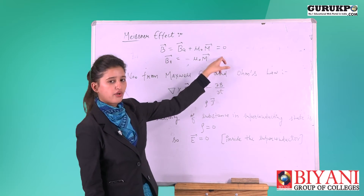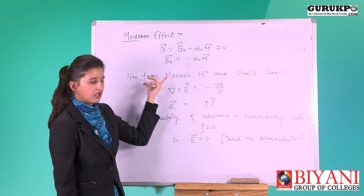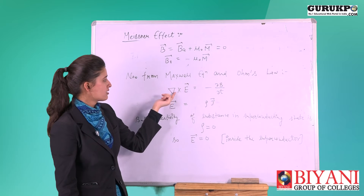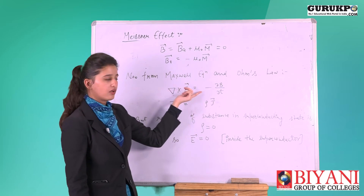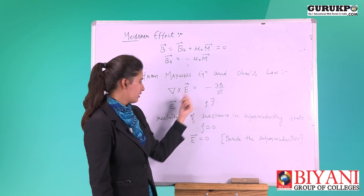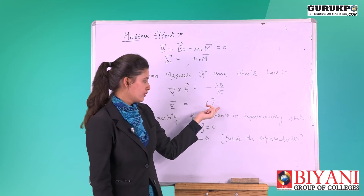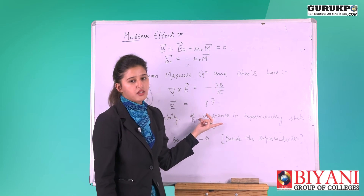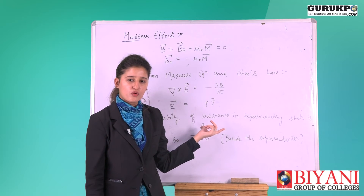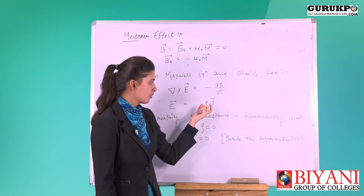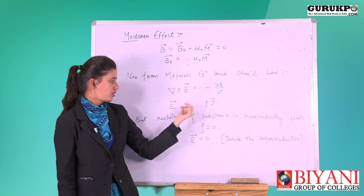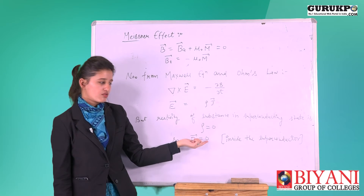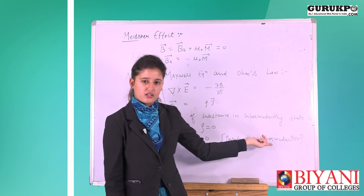After that we will take Maxwell's equation and Ohm's law. Maxwell's equation is: ∇×E equals minus ∂B/∂t, and E equals ρ times J. But we know that in the superconductivity condition, resistivity is negligible — almost zero. So ρ equals zero. In this equation, if we take ρ equal to zero, then E will be equal to zero inside the superconductor.